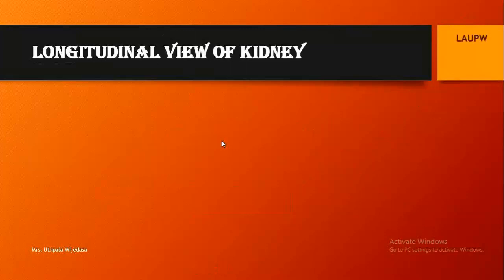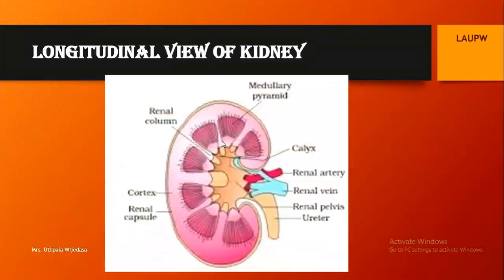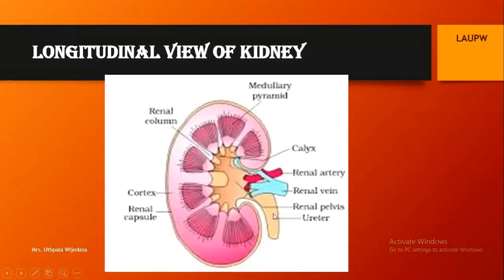Let's have a look at the longitudinal section of the kidney. The outermost part is the renal capsule, and inner to that is the renal cortex. The inner area is known as the medulla, where you can see the medullary pyramids. These regions are known as the calyx, and the ureter begins at the renal pelvis. In those pyramid regions we can find the basic structural and functional unit of the kidney: the nephron.